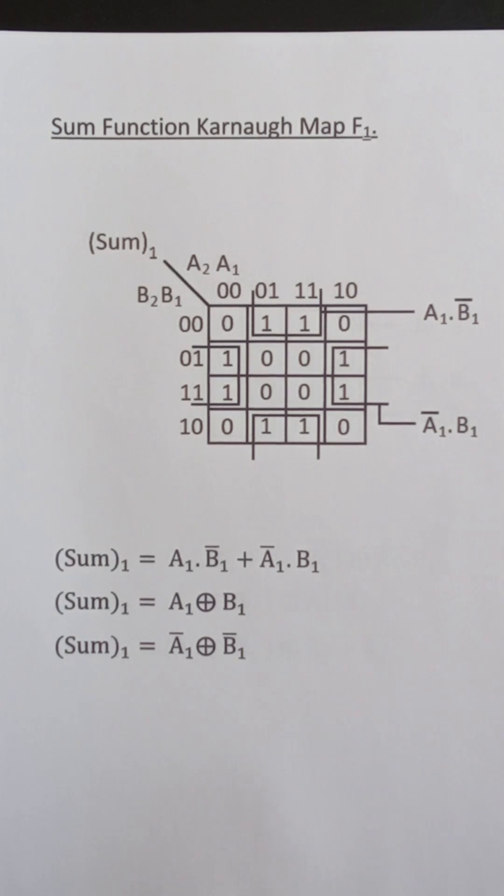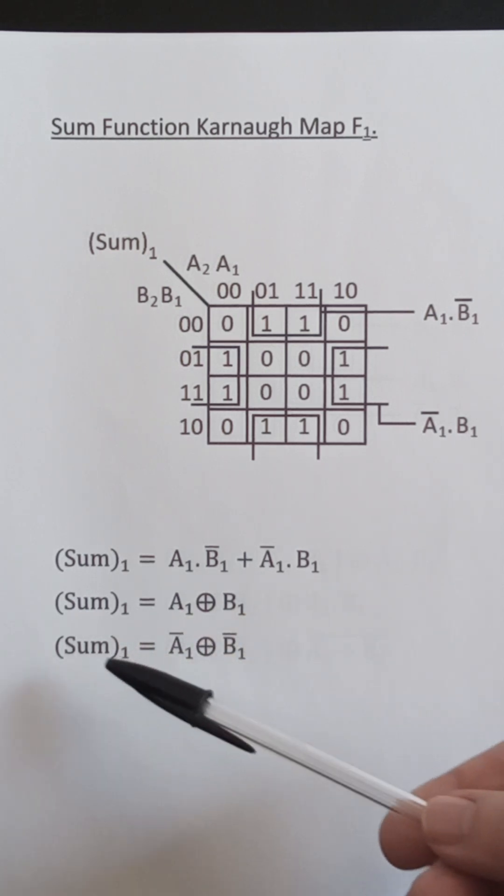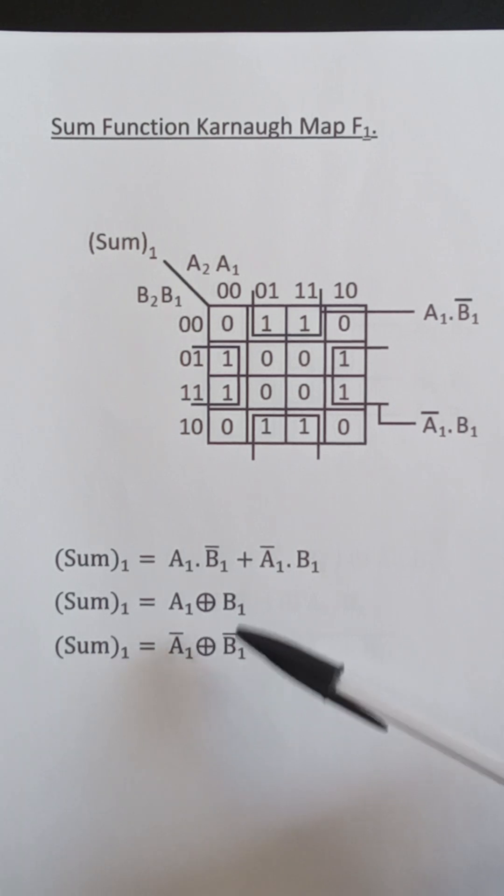Here we have a Karnaugh map for sum1. This loop here is A1 and not B1 and this loop here is not A1 and B1. So sum1 equals A1 and not B1 or not A1 and B1 which is the definition of the exclusive or gate. So we have A1 exclusive or B1 and if you complement both the inputs of an exclusive or gate it performs the same function. So sum1 equals not A1 exclusive or not B1.